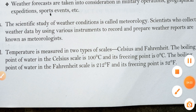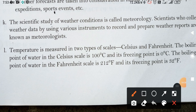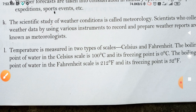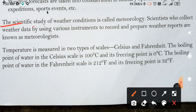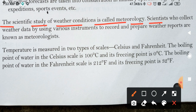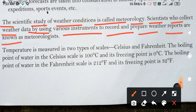Next question. The scientific study of weather conditions is called meteorology. Meteorology kis ko kehte hain — jo scientific study hoti hai weather condition ki, usko meteorology kehte hain. Scientists who collect weather data by using various instruments to record and prepare weather reports are known as meteorologists. Jo scientist weather conditions ke baare mein study karte hain, unko meteorologist kehte hain.